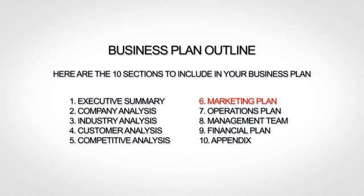The sixth section is your marketing plan, where you lay out your marketing strategy. The seventh section is your operations plan, where you explain how you actually run or will run your business. The next section, the management team, is where you provide bios of your team. The ninth section is your financial plan, where you give financial forecasts. And finally, the tenth and last section of your business plan is your appendix, where you provide any additional supporting information.